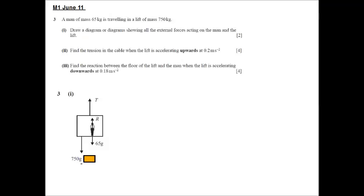So I have just put that down for us. The first thing is, I would draw the lift and we would put the tension in the cable pulling the lift and the mass of the lift, hence the 750G. We would then put the man inside the lift so his weight is 65G acting downwards, and also they add in the normal reaction.